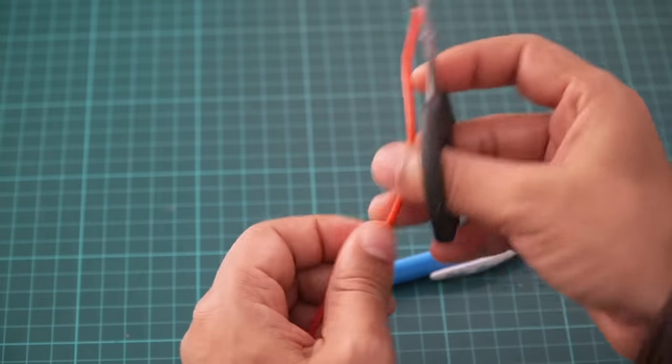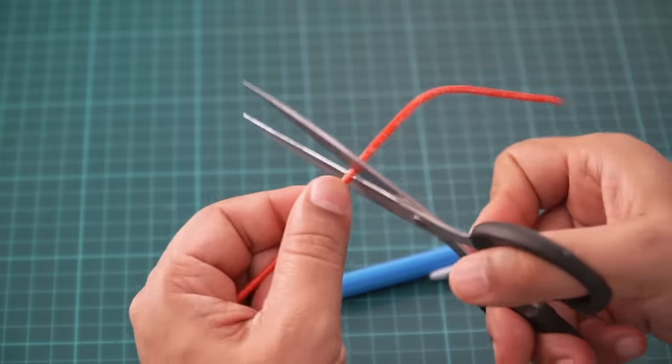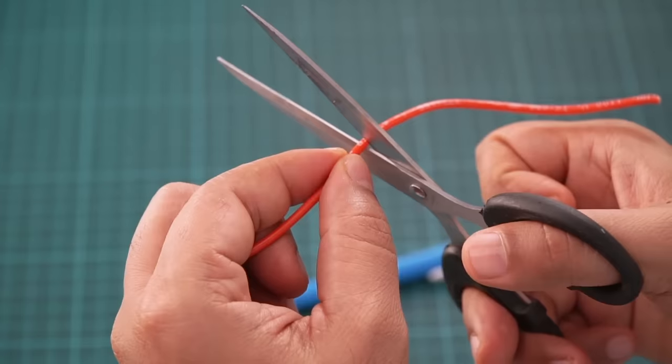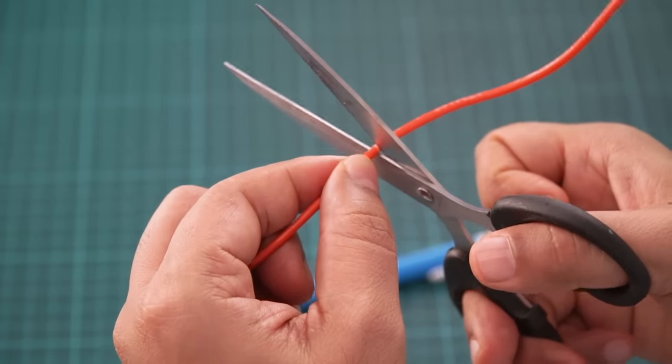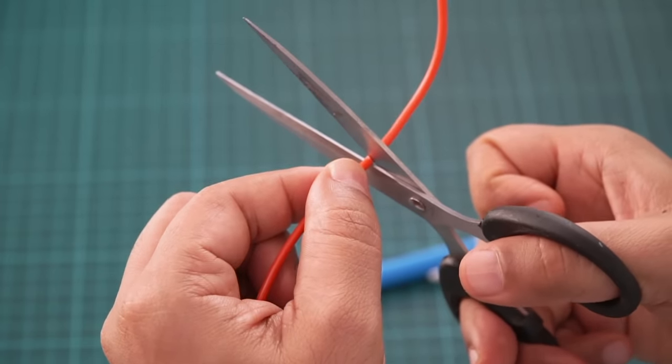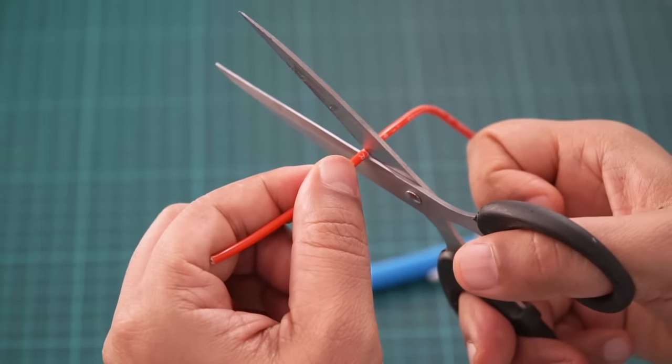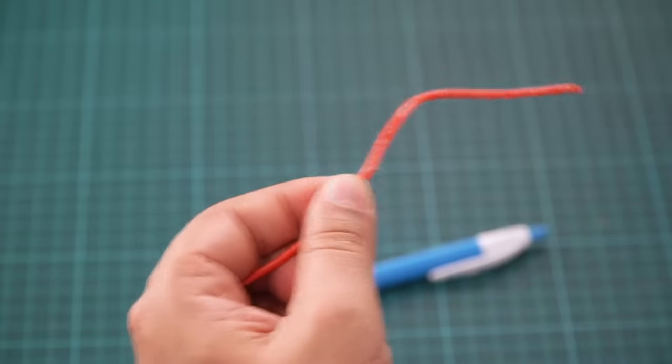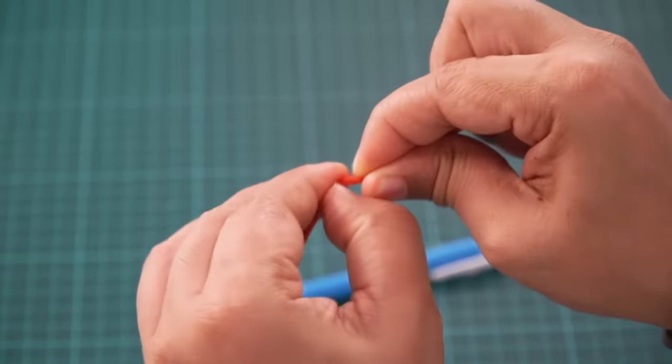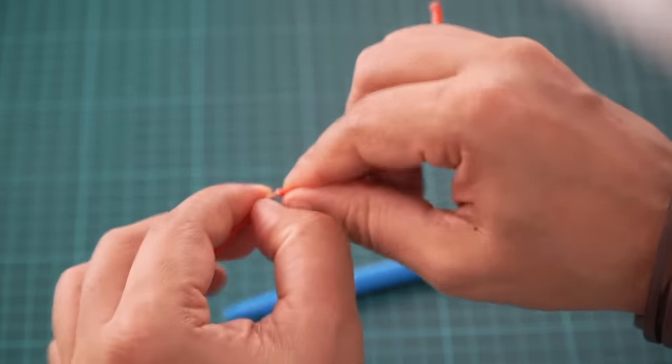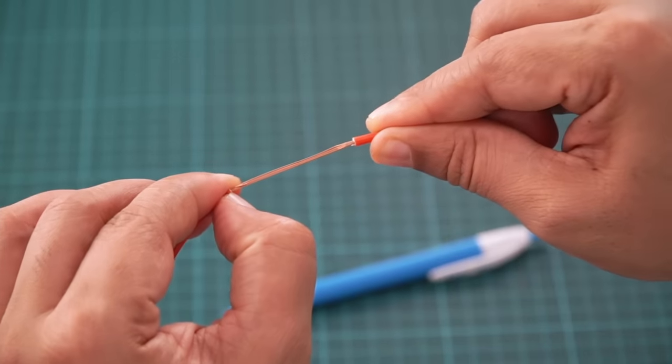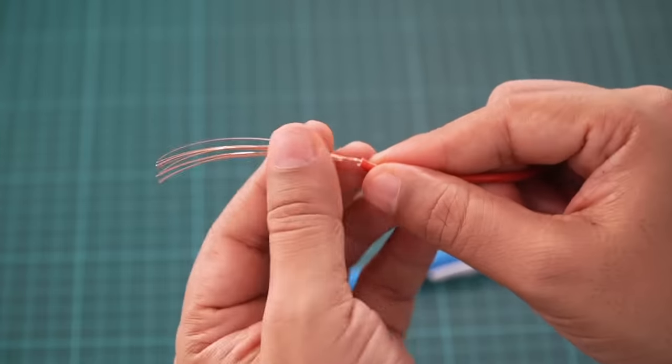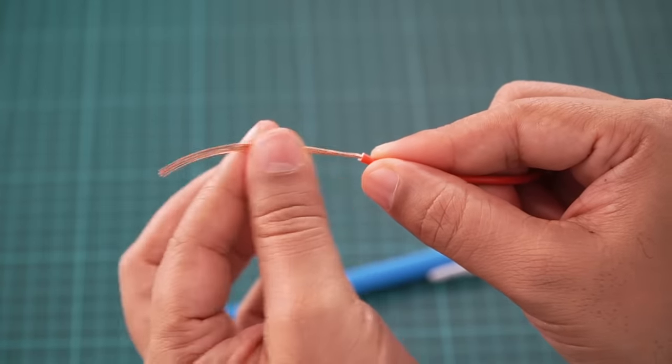Now what we'll do is we'll make a small cut on this. Now make sure when you're making this cut, you don't cut through the copper wire. We are just cutting the top layer, which is this plastic cover, the insulation. And we will remove the insulation. There you go. You can see we have this copper wire inside.